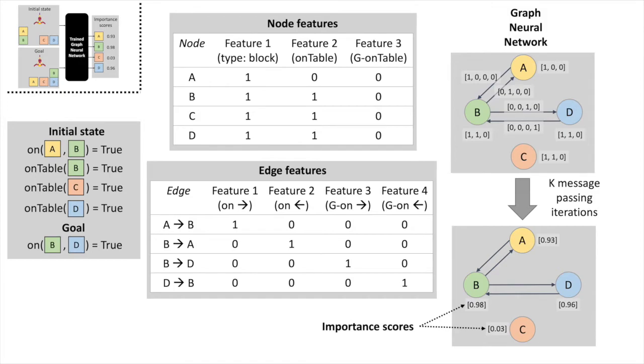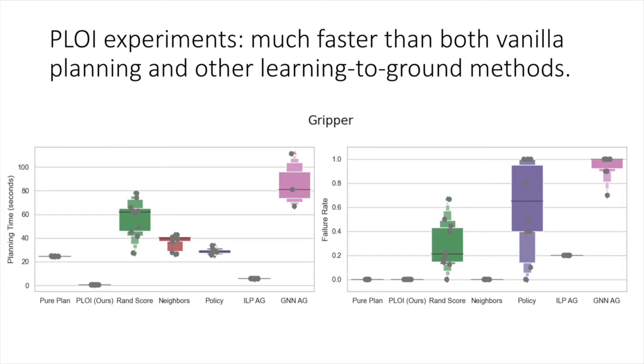Experimentally, we see that PLOY performs very well compared to several baselines, including vanilla FastDownward and several learning-to-ground baselines. These graphs show the average planning time and failure rate within a 120-second timeout for the various methods on the gripper domain.